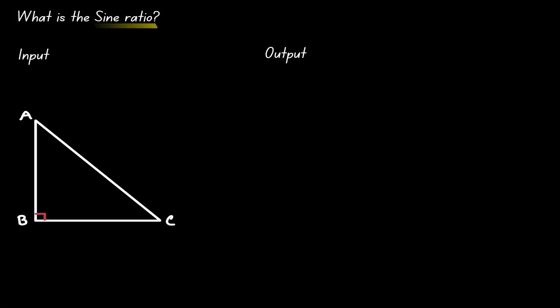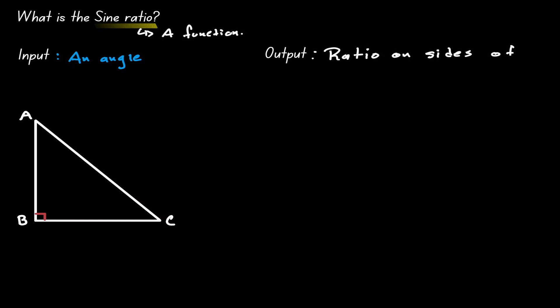We can think of the sine ratio as a function. What we plug into this function is an angle. And after the angle has been plugged in, we obtain a ratio on the sides of the right triangle, in the form of opposite divided by hypotenuse.